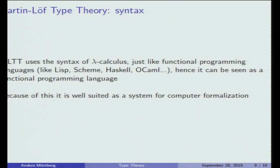You can add axioms to type theory that are not constructive, like the Law of Excluded Middle, but if you don't add any axioms it will be a constructive intuitionistic system. There's also a connection to programming languages, because the syntax that type theory uses is the lambda calculus, which also comes from Alonzo Church. Many functional programming languages like Lisp, Haskell, and Scheme build on these ideas, and even MATLAB has lambda anonymous functions. This is one reason why many proof assistants are based on type theory rather than set theory.